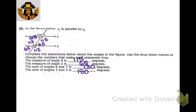Same kind of angle relationships with parallel lines — vertical angles, linear pair, alternate interior angles. Angles 6 and 7: we add them together — 65 plus 65 gives 130. Angles 3 and 5 are same-side interior angles, so they're supplementary — that's why they equal 180.